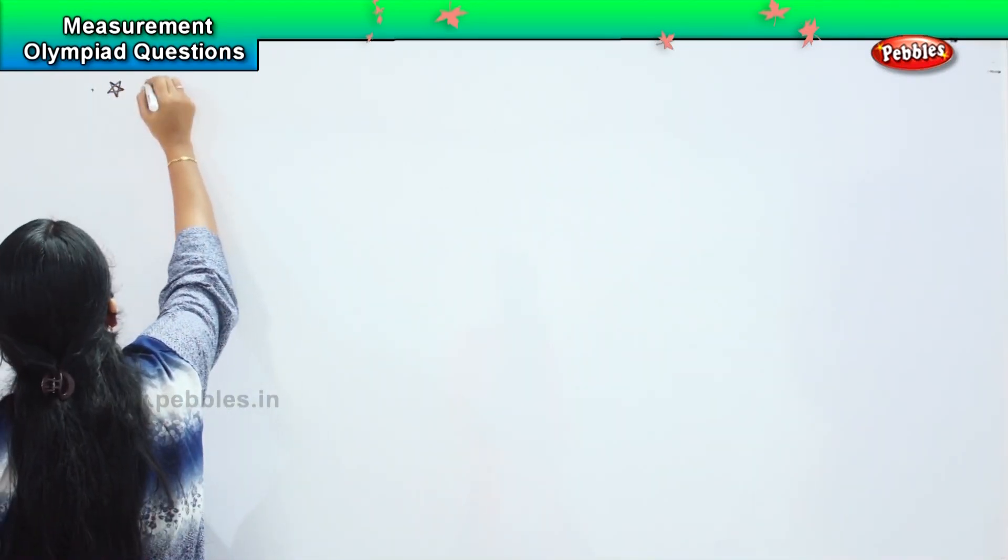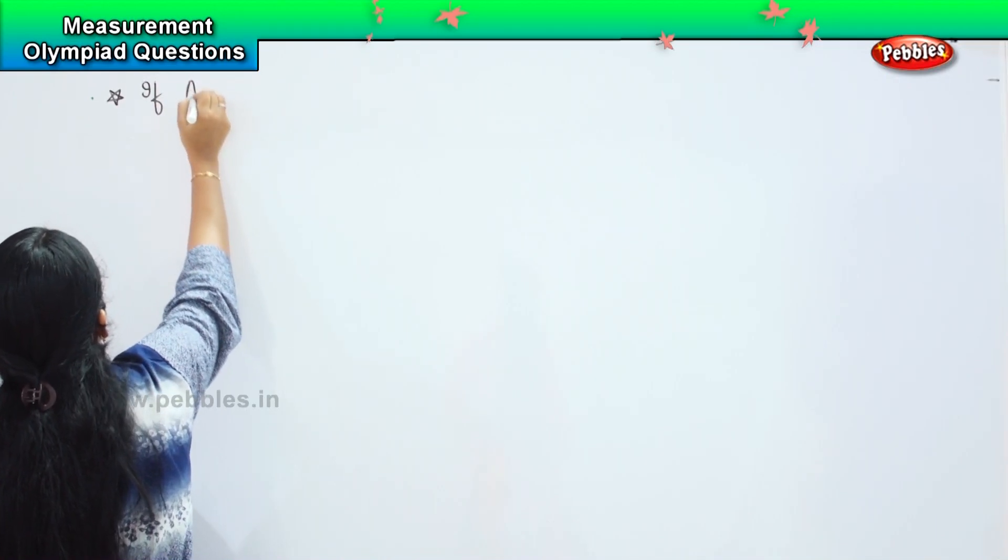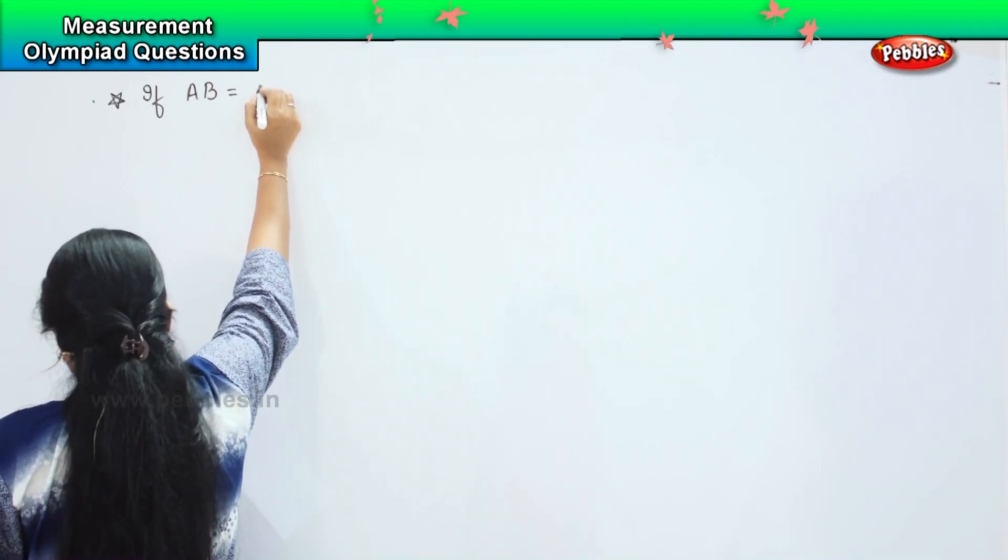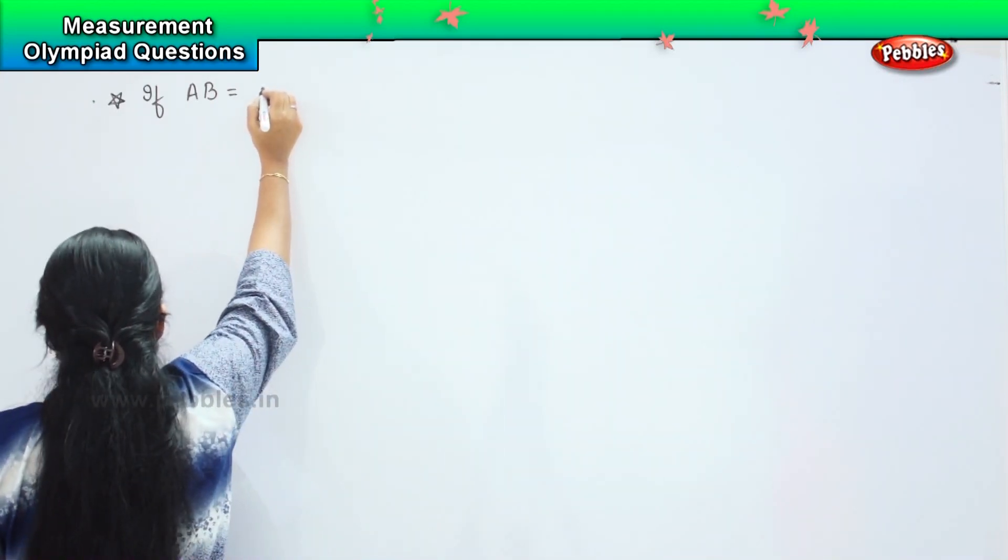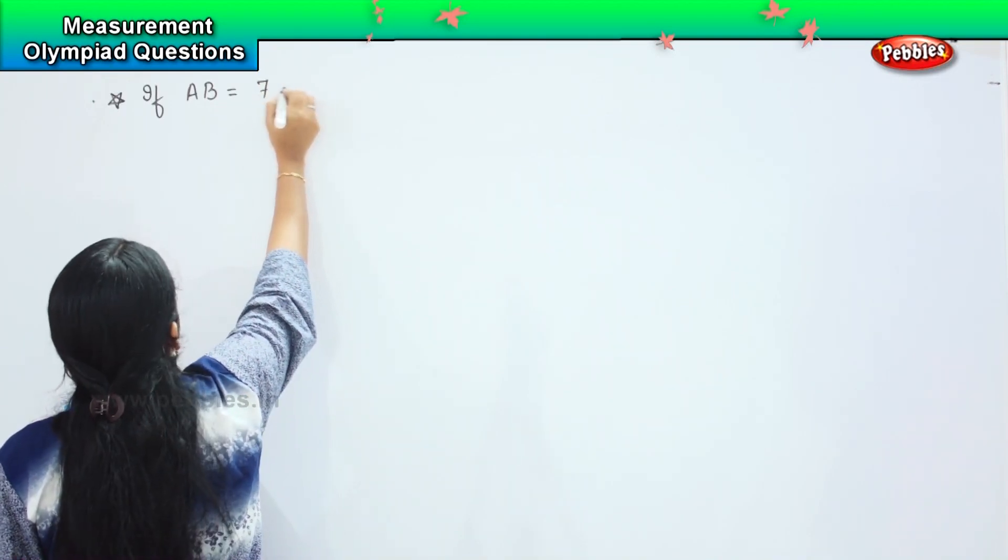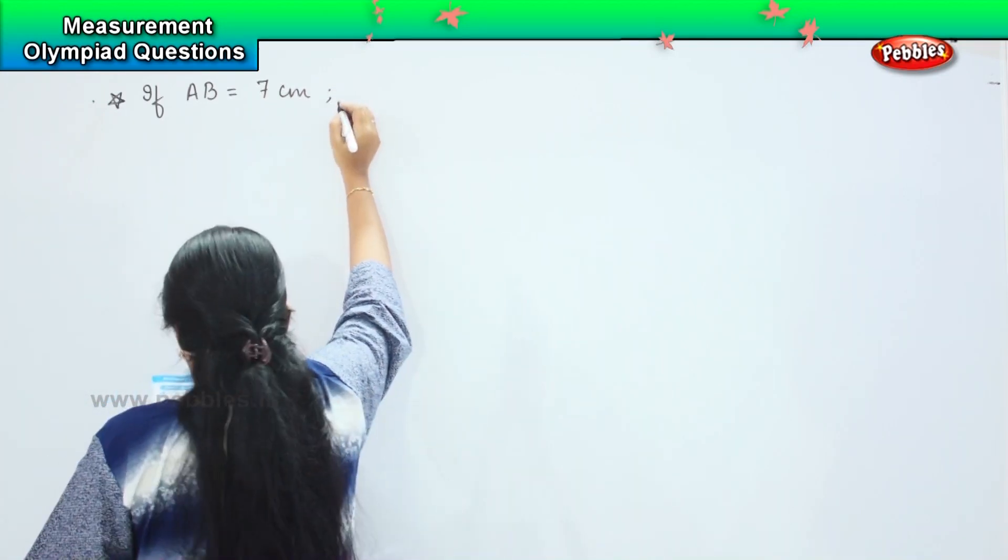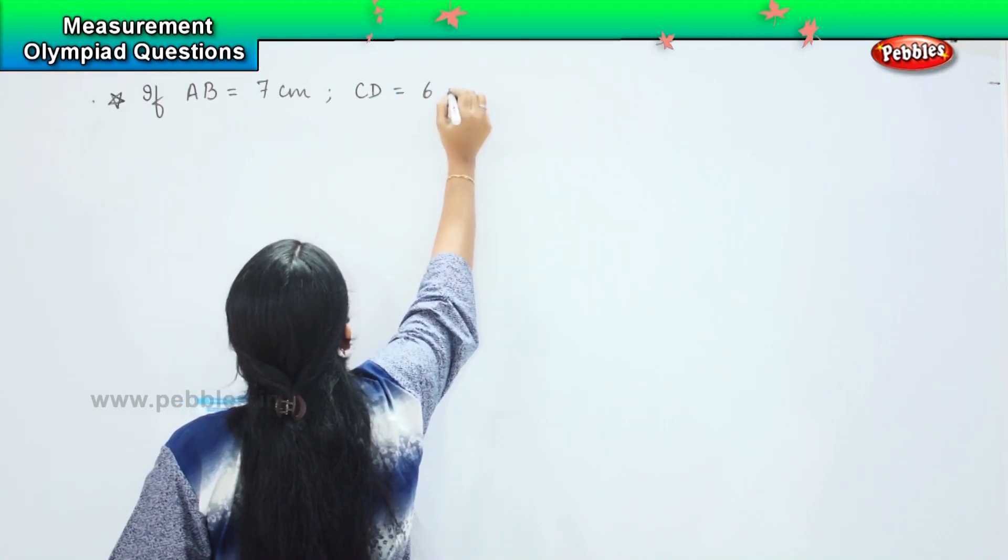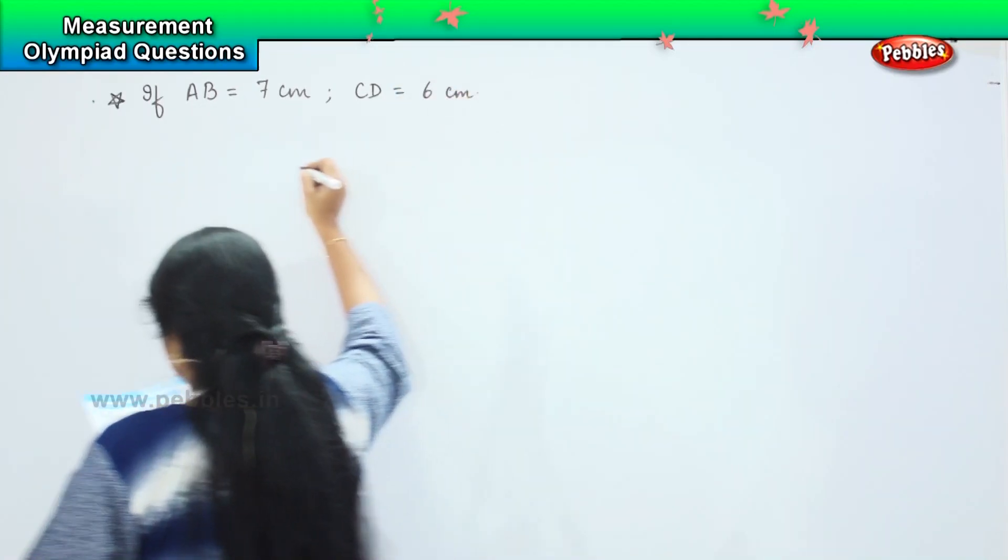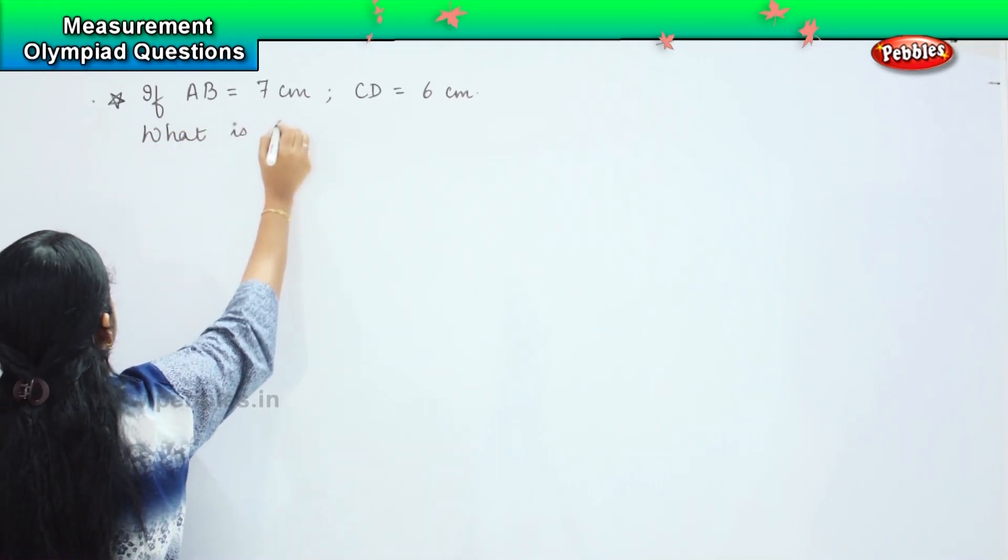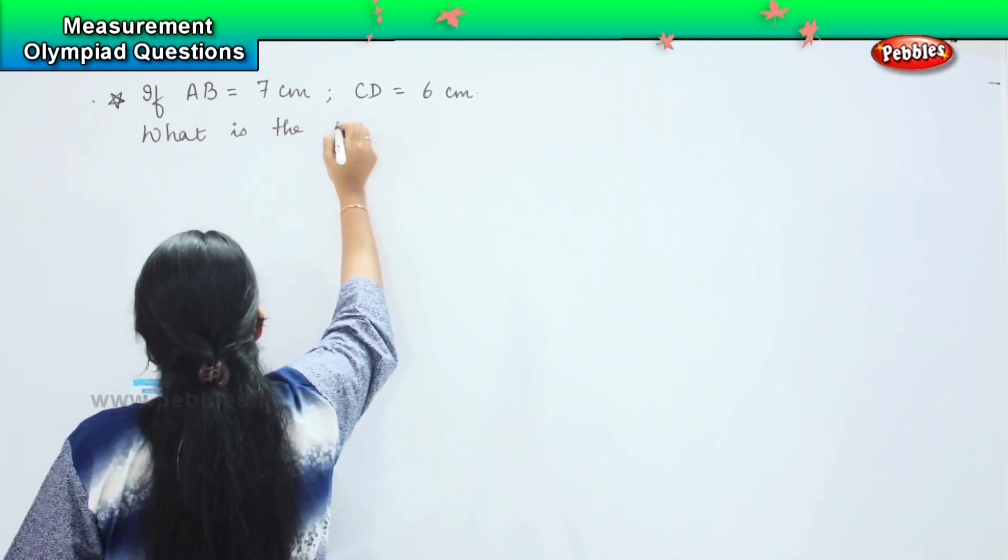The first sum is: if AB is equal to 7 centimeter and CD is equal to 6 centimeter, what is the total length?